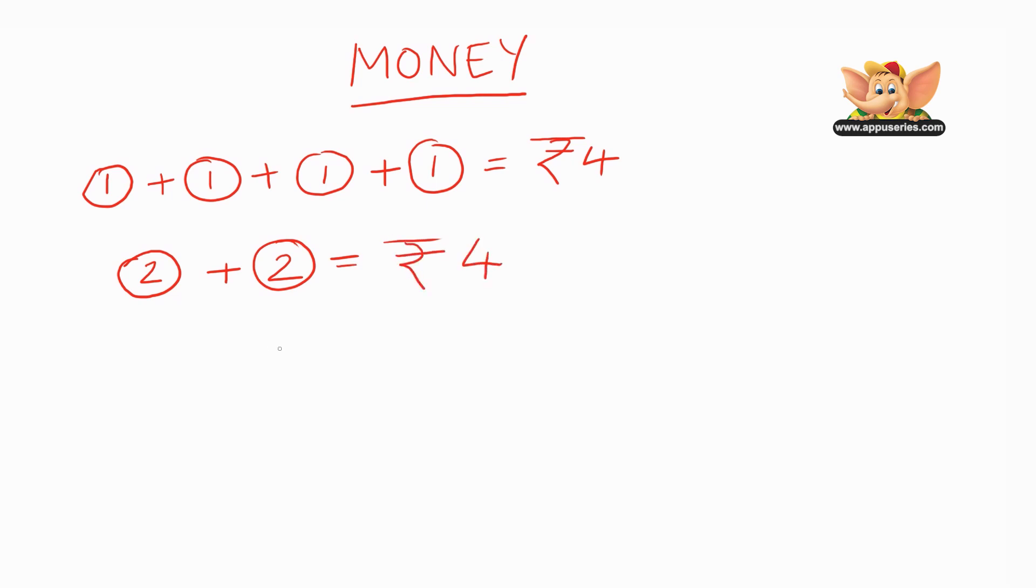That's 2 two-rupee coins, also gets 4 rupees. Now, one more combination. Let's use 1 two rupee coin, and we're also going to use 2 one rupee coins. So, if we add them together, 2 plus 1 plus 1 will give us the same answer: 4 rupees.